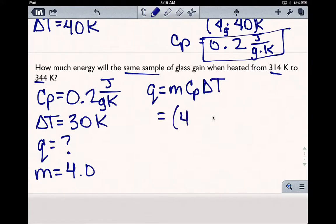Our mass is 4. Our specific heat is 0.2. And our change in temperature is 30. So 4 times 0.2 times 30 is 24. And this would be in joules.